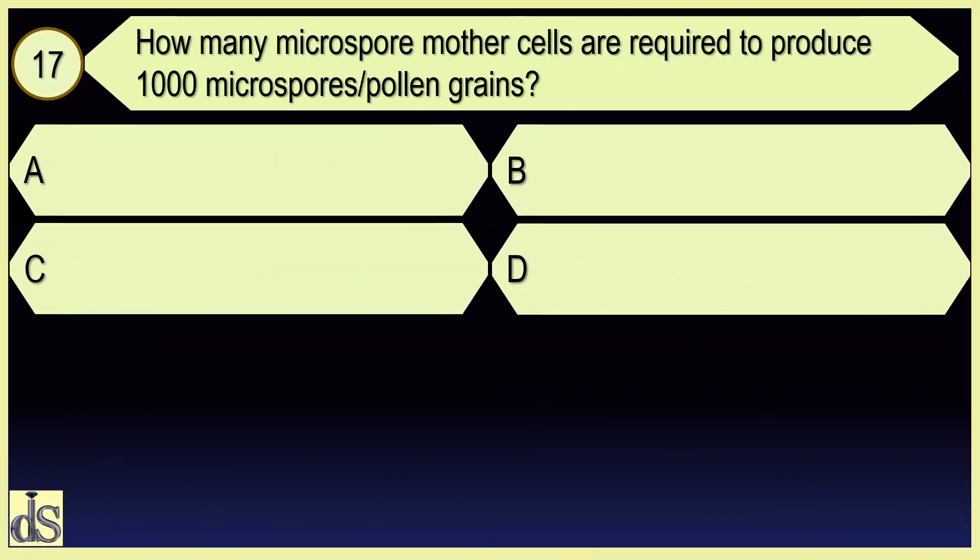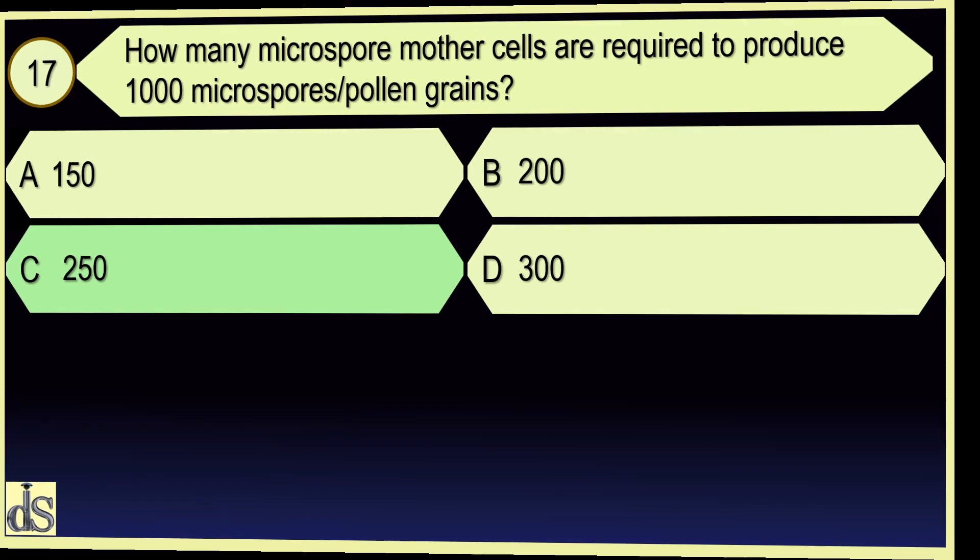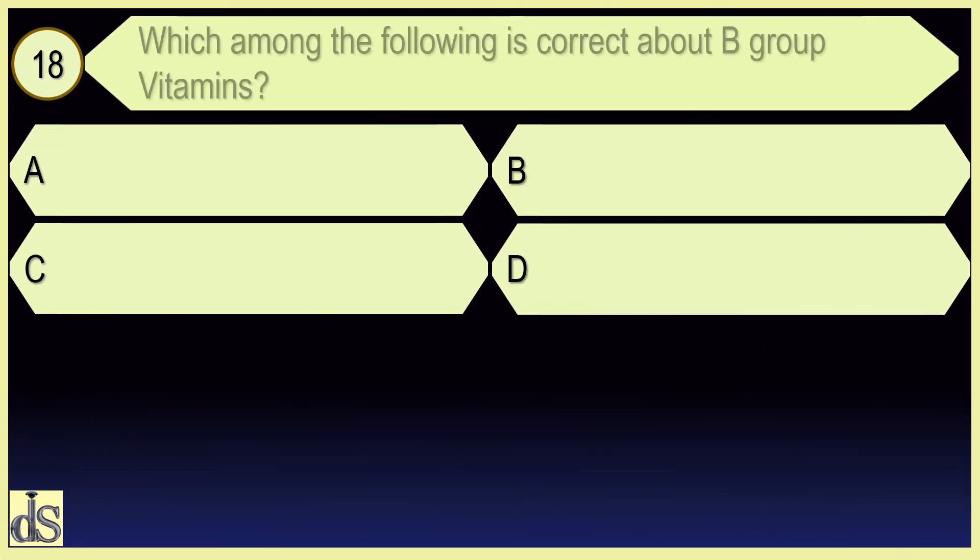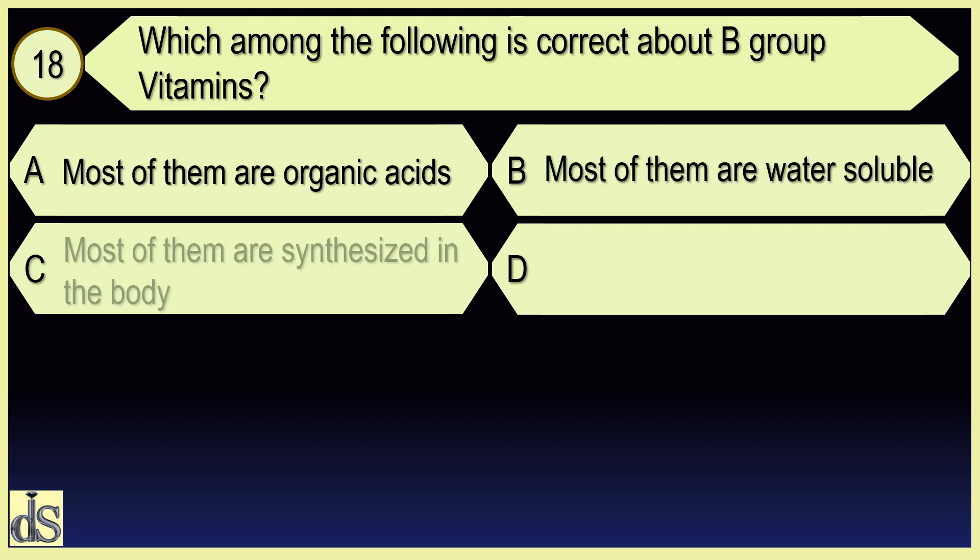How many microspore mother cells are required to produce 1000 microspores or pollen grains? 250. Which among the following is correct about B group vitamins? Most of them are water soluble.